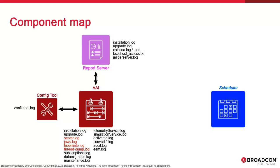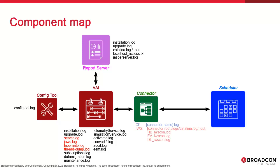If you're familiar with Tomcat, you'll know that the main logs are katalina.log and .out. The report server uses a third-party web app called Jasper, which comes with its own logging capabilities. Connectors come in two types. First, the connector framework supports Atomic, Control-M, and ESP. Second, a modified Tomcat web server supports IWS with katalina and three logs tracing heartbeat, events, and definitions.